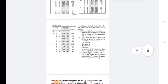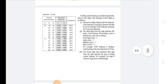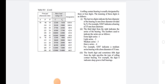A rolling contact bearing is usually designated by three or four digits. The last two digits indicate the bore diameter of the bearing in mm, calculated as: bore diameter divided by 5. For example, XX07 indicates a bearing with a 35 mm bore diameter. The third digit from the right indicates the series of the bearing.